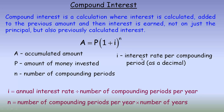I is the interest rate per compounding period, and it's always written as a decimal. The way you calculate i is to take the annual interest rate — the interest rate per annum (annum is Latin for annual or year) — and divide it by the number of compounding periods per year. We're going to look at that in the example on the next page. And n is the number of compounding periods.